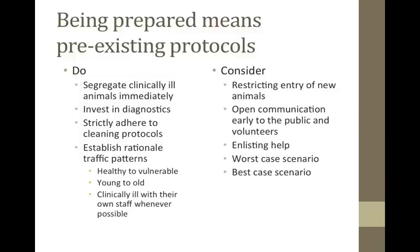Consider restricting entry of new animals if at all possible while you get things under control — recognizing that municipal shelters may not have that ability. Consider open communication early to the public and volunteers. I wouldn't go out saying 'the sky is falling,' but once you've had a moment to sit down, think about it, and confirm you have an outbreak, communicate it. Don't try to hide it — the word gets out there for sure.